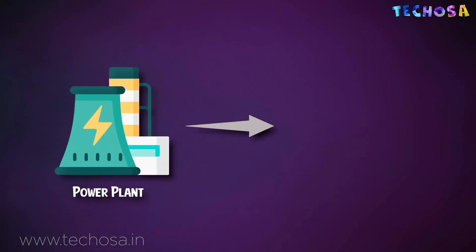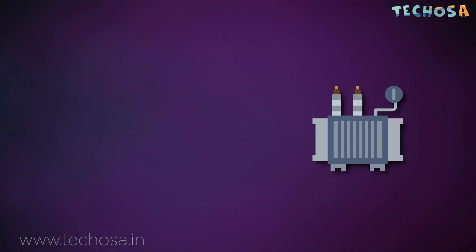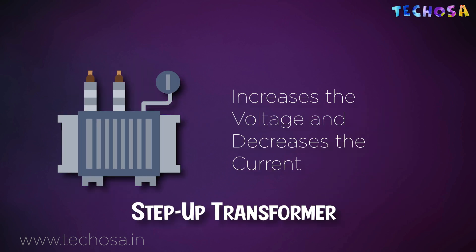Now you have an idea of how electricity is generated. But how is it transmitted to the switch points of a home? Electric transmission is a vital link between power production and power usage. Transmission lines carry electricity at high voltage over long distances from power plants to communities. Electricity generated from the power plant goes to a step-up transformer — a large device that increases the voltage and decreases the current. This is done to prevent heat loss during transmission over longer distances.